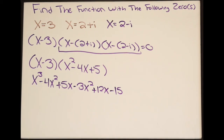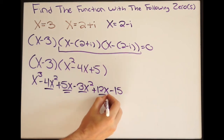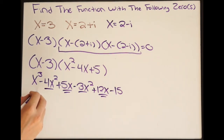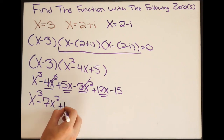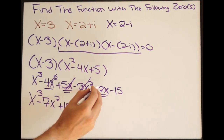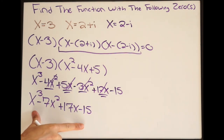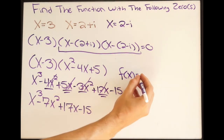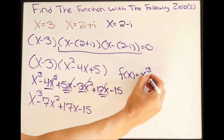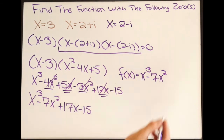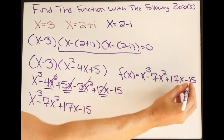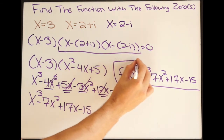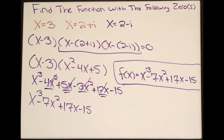Combining like terms — negative 4x squared and negative 3x squared combine, and positive 5x and positive 12x combine — we get x cubed minus 7x squared plus 17x minus 15. So our function is f(x) equals x cubed minus 7x squared plus 17x minus 15. This is the function that has the given zeros.